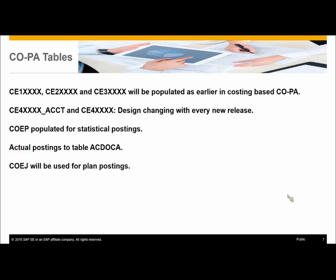For plan data, the tables currently remain the same: COEJ for line items, and COSS and COSP for totals. There is another table in the pipeline called ACDOCP — Accounting Document Planning. That will come sometime in the future so that planning is also in one table, but that is in the pipeline as of now.